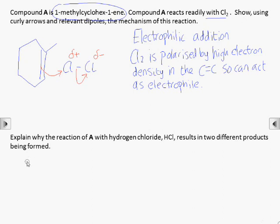As this happens, the chlorine-chlorine bond breaks heterolytically, with the bonding pair ending up on the delta negative chlorine to form a chloride ion.